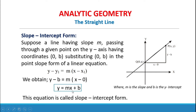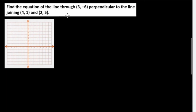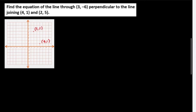Example: find the equation of the line through (3, −6) perpendicular to the line joining (4, 1) and (2, 5). We plot the points (4, 1) and (2, 5) and connect the two points to form a line.